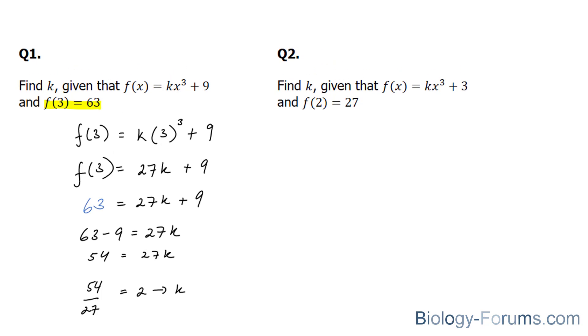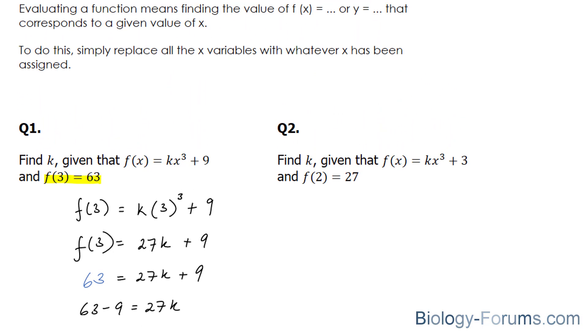Let's move on to question number 2. In this question, they're asking us to find k given that f of x is equal to k times x to the power of 3 plus 3. And f at 2 is equal to 27.